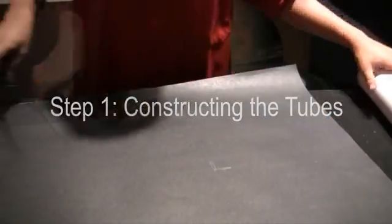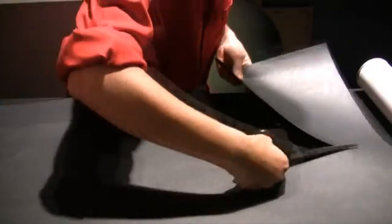Cut three pieces of bristle board that fit around the tube. Measure two to be the same length as your tube and one to be twice the length.